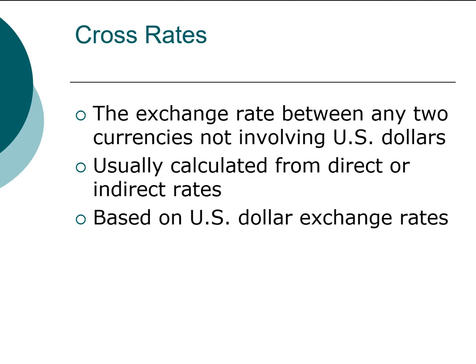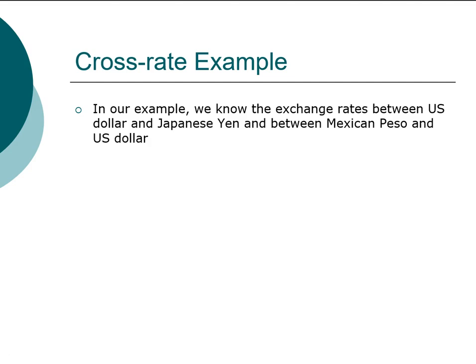Even though Japan may be conducting trade with Mexico, they will first look at the Japanese exchange rate with the US dollar and what the peso exchange rate is with the US dollar, and then figure out the exchange rate between the Japanese yen and peso. The reason is that the amount of trading between the US and Japan and between the US and Mexico is significantly bigger than trade between Mexico and Japan directly.